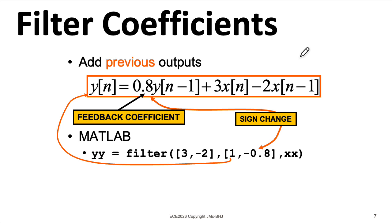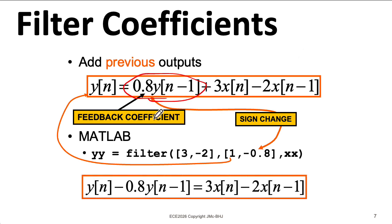The underlying idea here is that we imagine moving all of the Y terms over to the left-hand side. So when you do that, the signs flip on everything except the implicit one that's sitting in front of the y[n].